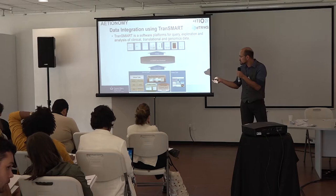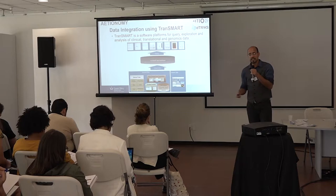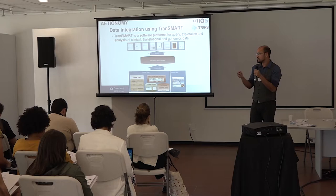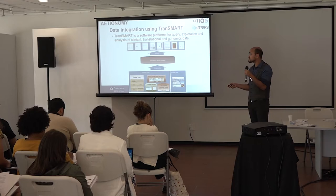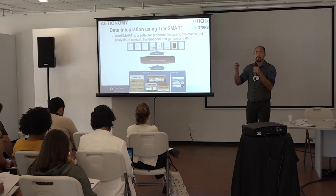The idea is that you take source data guided by the relevance of information in scope of the disease, and then load it using extraction, transformation, and loading routines — normally a business intelligence layer. You load this onto the TransMart data warehouse, which is a PostgreSQL system being changed now to MongoDB, as everyone knows it's a more efficient big data solution.